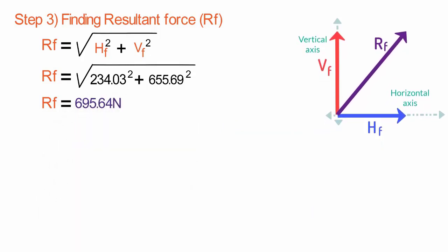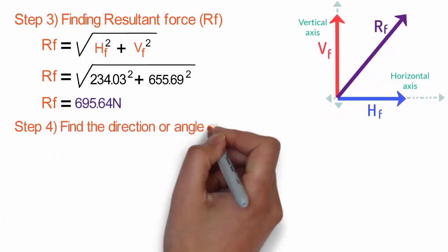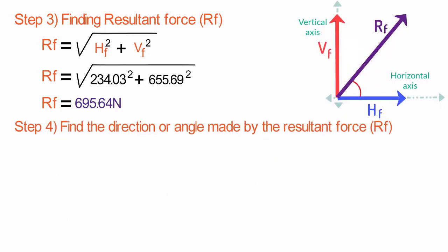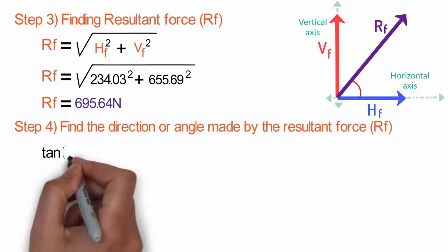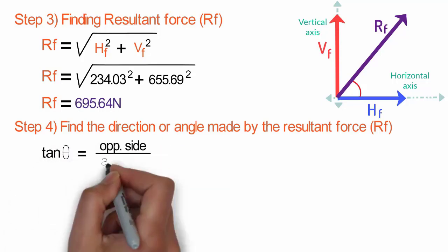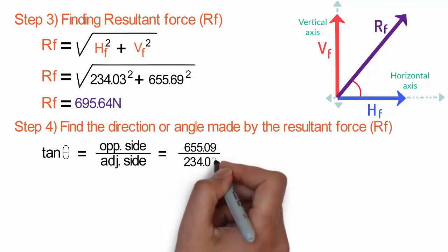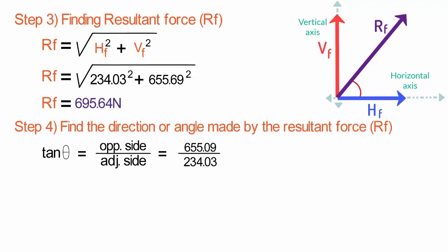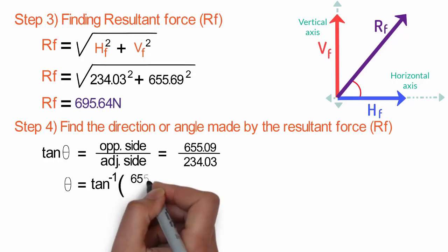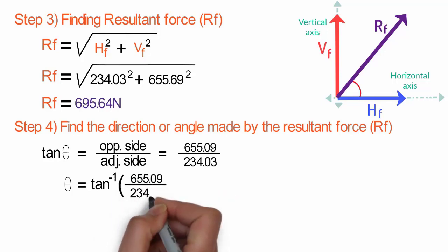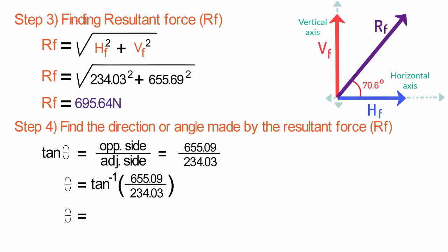The last step, Step 4, is to find the direction or angle made by the resultant force Rf with the horizontal axis. Using the trigonometric formula tan θ = opposite side / adjacent side, where the opposite side is Vf = 655.09 N and the adjacent side is Hf = 234.03 N. Therefore θ = tan⁻¹(655.09 / 234.03) = 70.6 degrees.